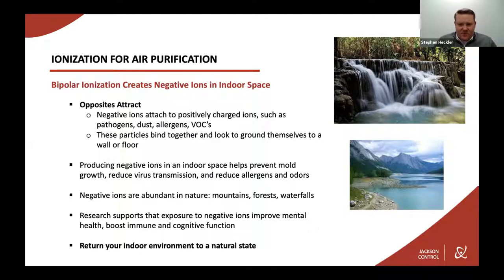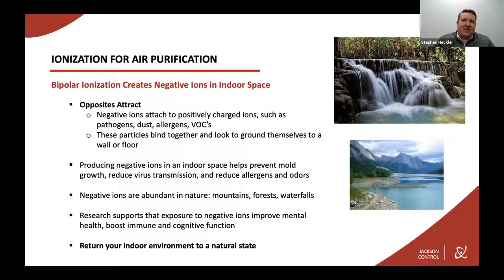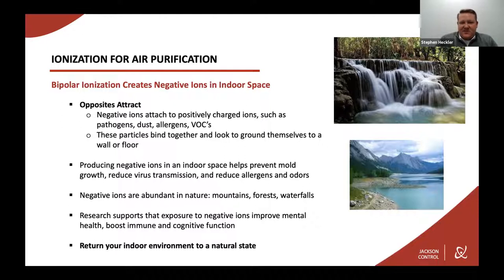If you're standing near a waterfall, or right before a thunderstorm, you can feel that nice crispness in the air — you're essentially surrounded by negative ions. They bind to those positively charged particles and affect how they're charged, causing them to seek a ground — a wall, floor, or something inside ductwork. For a virus in particular, once a negative ion attaches to the coronavirus, it affects the RNA and the virus can no longer convert energy, so it dies off. The ionization doesn't directly kill the virus, but it inhibits its ability to multiply, mutate, and convert energy.